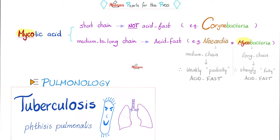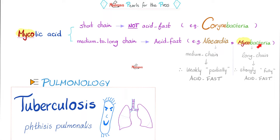There's a difference. In Corynebacteria, the mycolic acid is short-chain — that's why Corynebacteria is not acid-fast. Nocardia has medium-chain mycolic acid, that's why Nocardia is partially acid-fast. But look at the mycobacteria: very long-chain mycolic acid. That's why they are strongly and fully acid-fast. 'Fast' means resistant, i.e. they resist the decolorization by acid solutions.